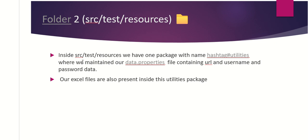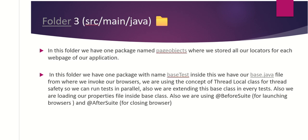The next folder is src/test/resources. Inside this folder we have one package named 'utility', where we maintain our data.properties file containing the URL, username, and password. Our Excel files are also present inside the utility package. The next folder is src/main/java, where we have one package named 'page object' where we store all our locators for each page of the application.